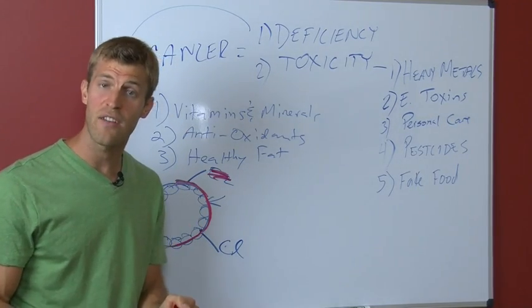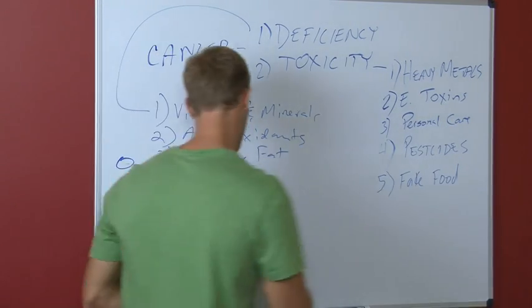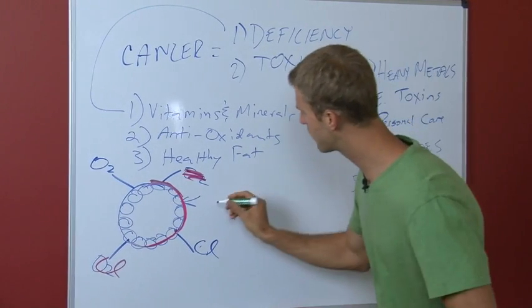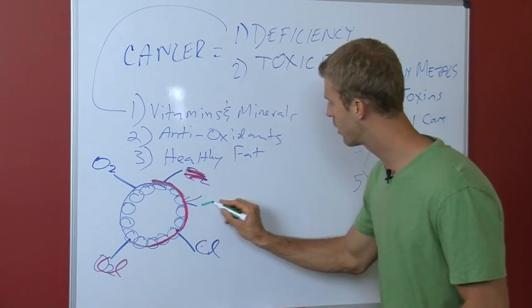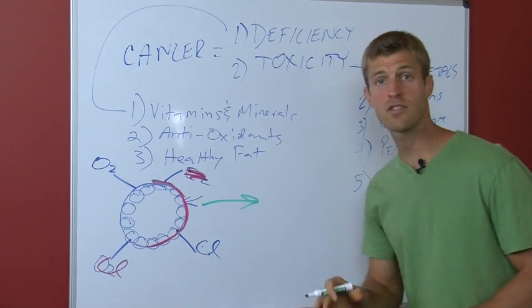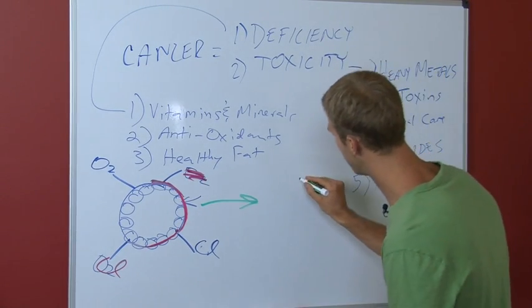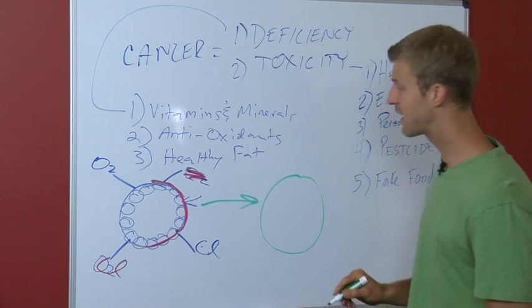In order to survive, your cell changes. We will flip over here. Now your cell actually becomes cancerous by changing what it feeds off of. Cancer cells feed off of sugar and it feeds off of a process known as fermentation. This here is what happens in a cancer cell.